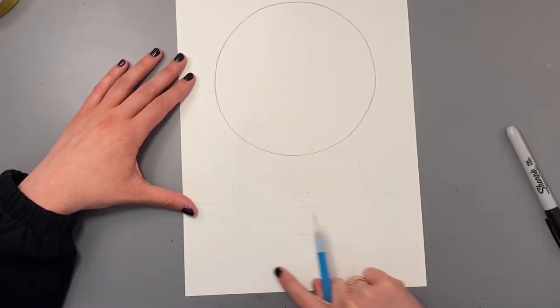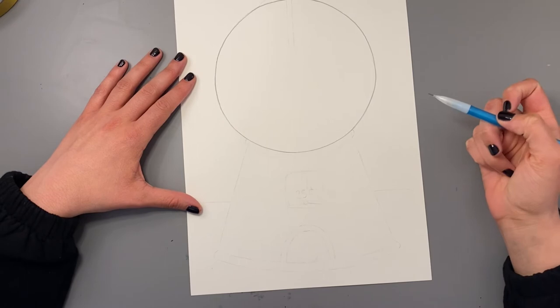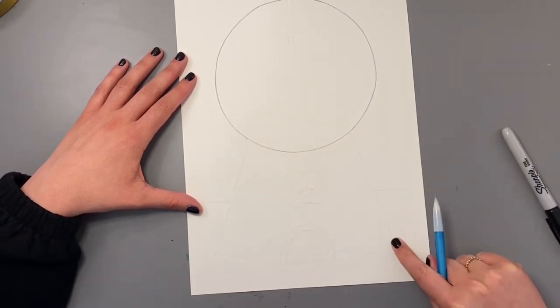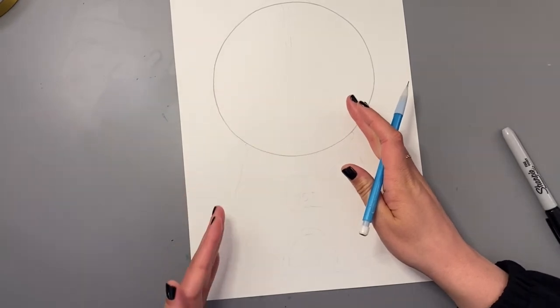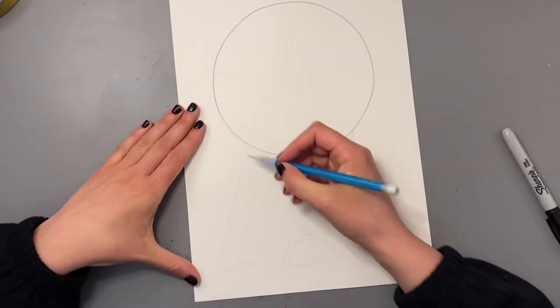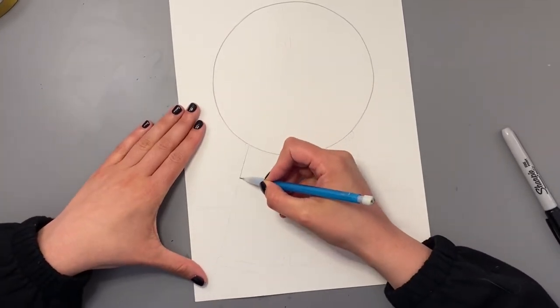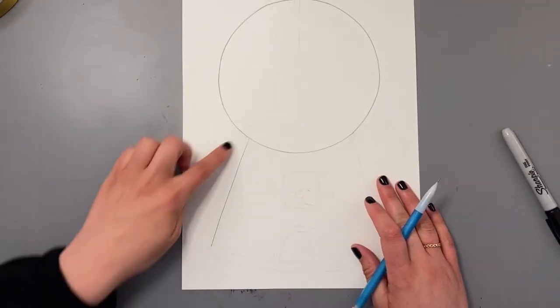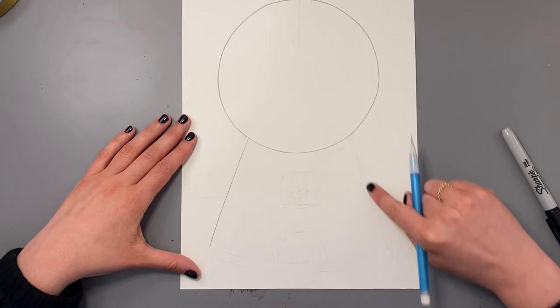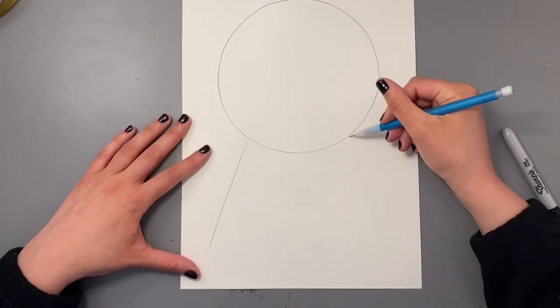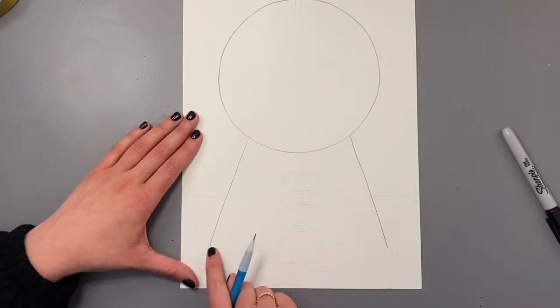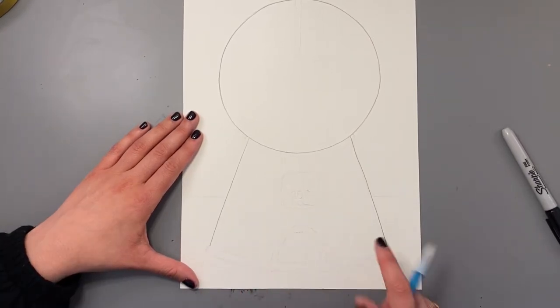The first thing we're going to do is draw the base of our gumball machine. So we're going to draw two diagonal lines on the sides. Diagonal, remember, is a straight line that goes at an angle. So here's one. Your line is coming out towards the corner and then this one's going to come out towards this corner. Here's the second one.